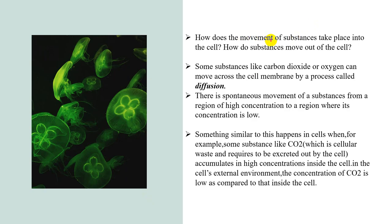Now, how does the movement of substances take place in the cell? How do substances move out of the cell? Some substances like carbon dioxide or oxygen can move across the cell membrane by a process called diffusion. In diffusion, gases move from a region of higher concentration to a region of lower concentration.